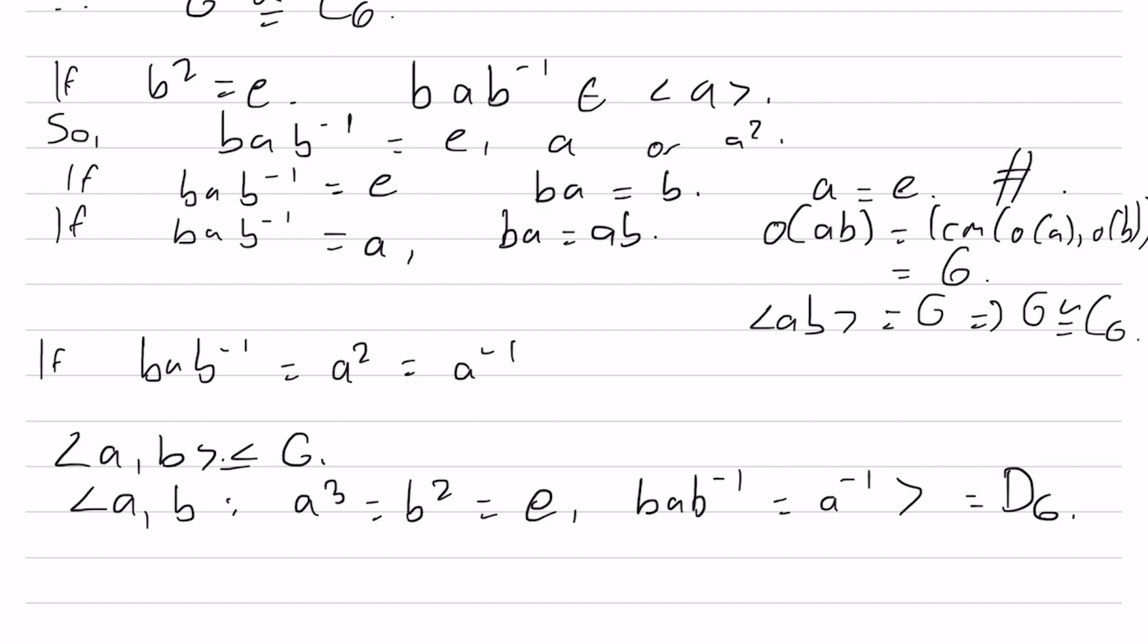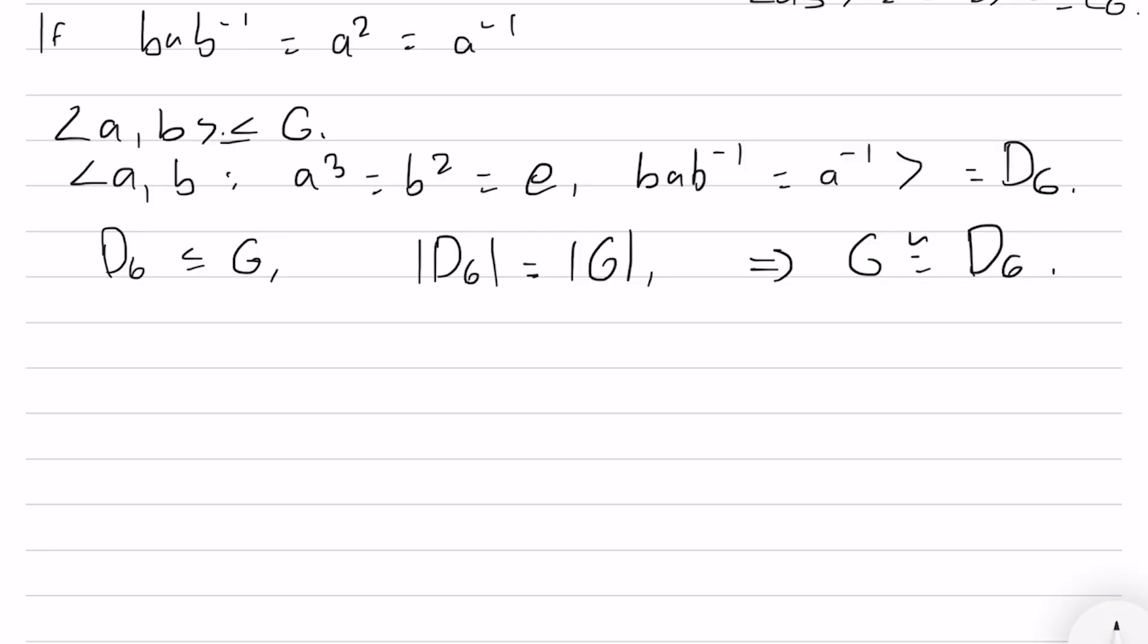And well, if we have D6 as a subgroup of G, and G is itself of order 6, that is, the orders of these groups match, then we must have that G is isomorphic to D6, and that proves the result.